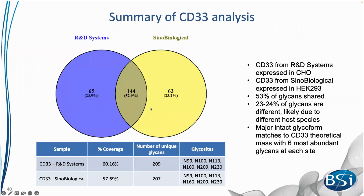Comparing glycan identifications between the two CD33 samples, we found that 53% of the glycans are shared between the two CD33 preparations, while approximately 23–24% are different. In total, we found 209 unique glycans from CD33 from R&D Systems and 207 unique glycans from the Sino Biological preparation across the six sites.